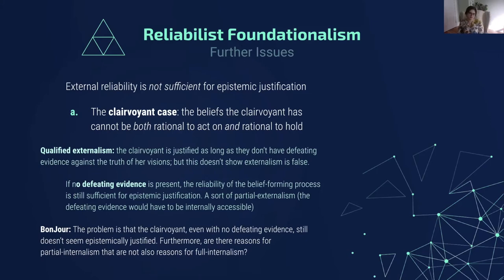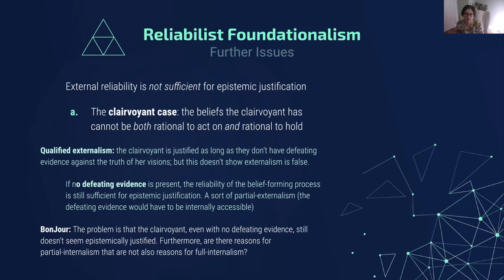Lawrence Bonjour snarks something like the following: the problem is that the clairvoyant, even with no defeating evidence, still doesn't seem epistemically justified. Bonjour just doesn't like the clairvoyant case as an example of someone with justification. Furthermore, he asks, are there reasons for partial internalism that are not also reasons for full internalism? Why go halfway? If you're going halfway, isn't that a reason to go the entire way with internalism? Why would partial externalism be a better view than full-on internalism? It feels like you're relying on internalist principles, so you might as well just admit that you're an internalist.